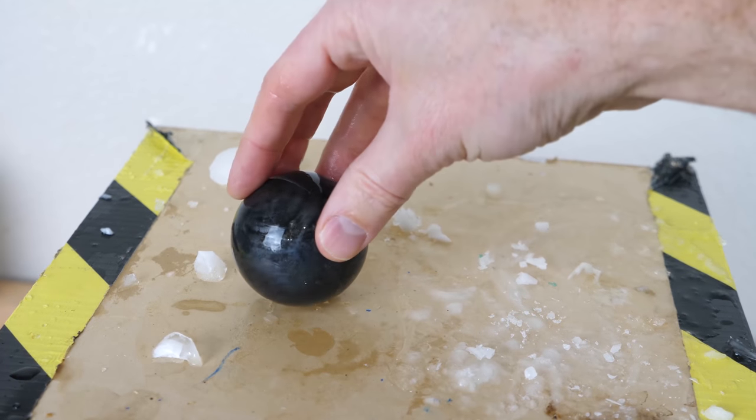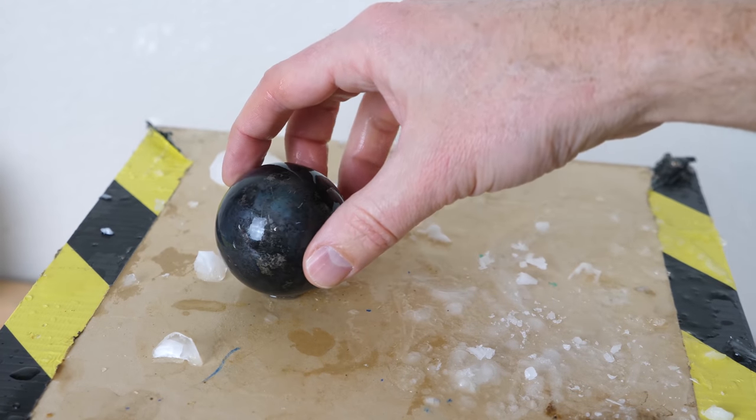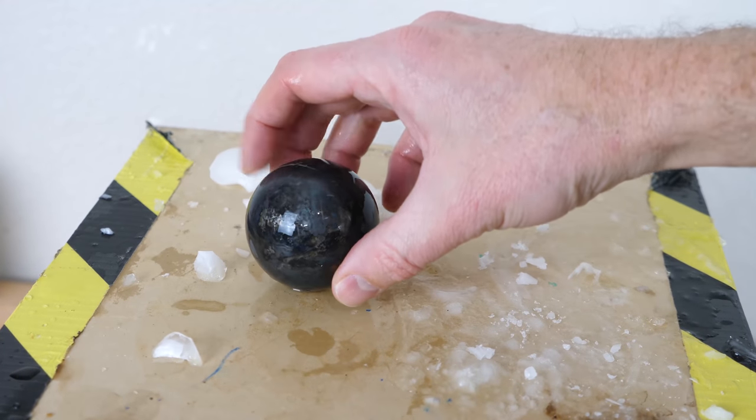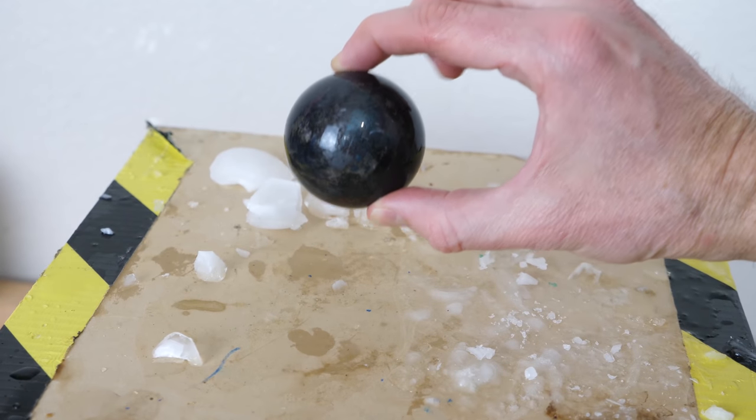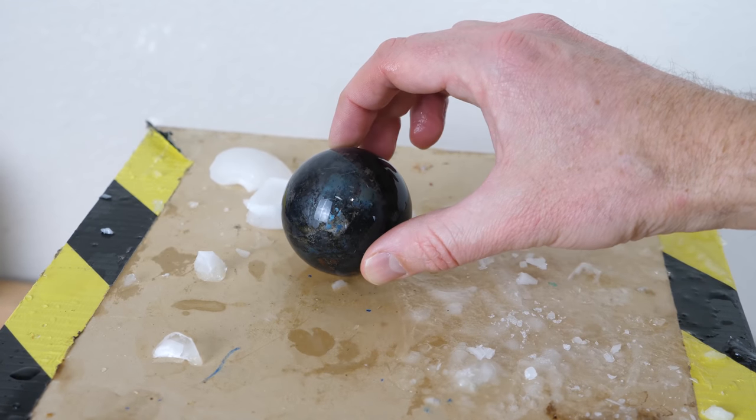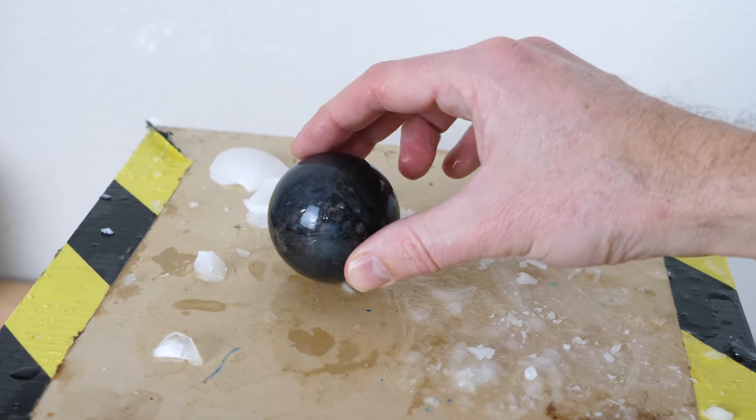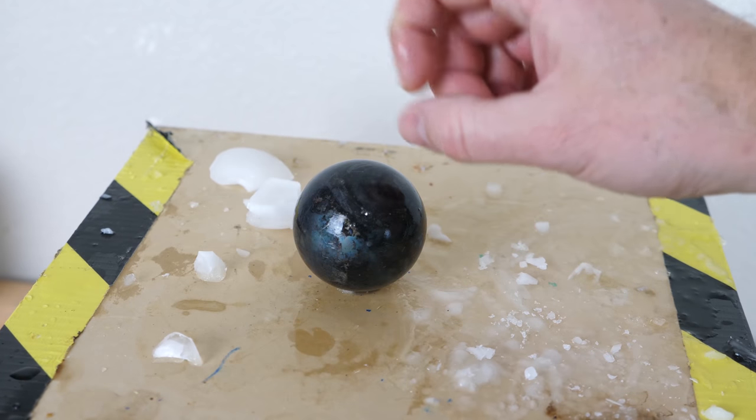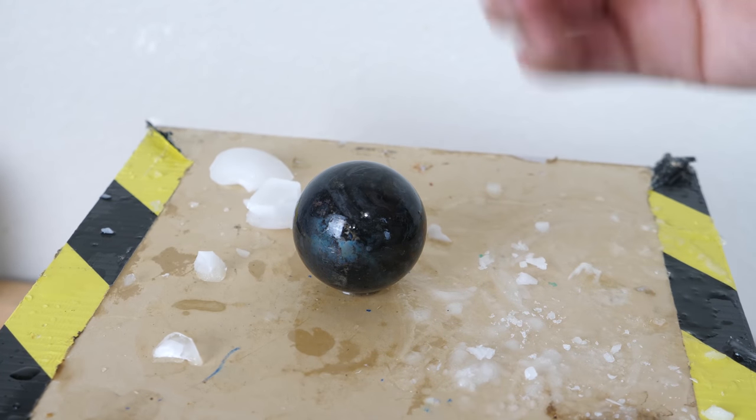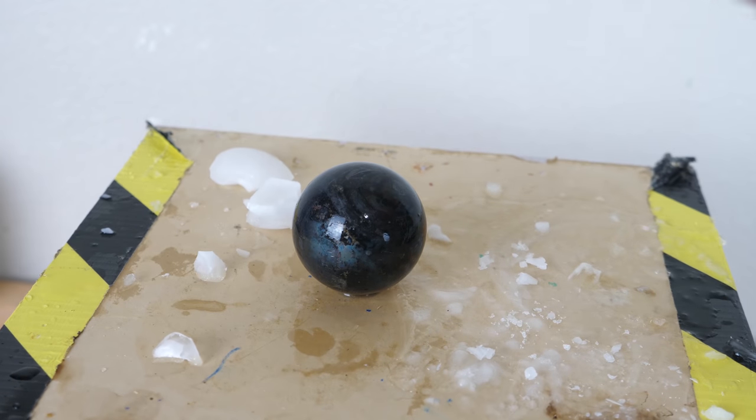So the only heat that this ball saw was the heat that came from water turning into ice. And so the water turning into ice is actually what warmed this up. So this proves that water turning to ice is actually exothermic, meaning it gives off heat, the same way that combustion is exothermic.